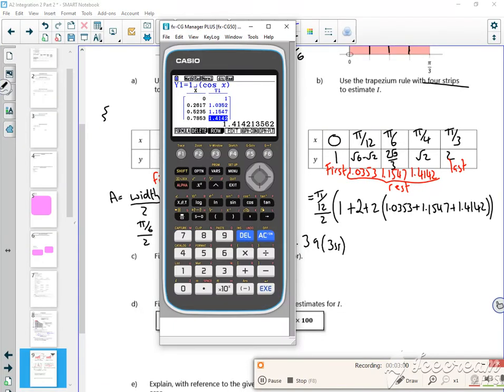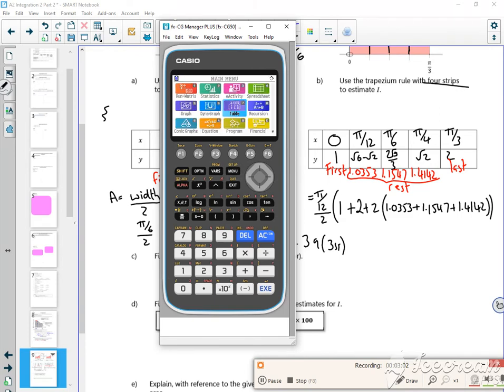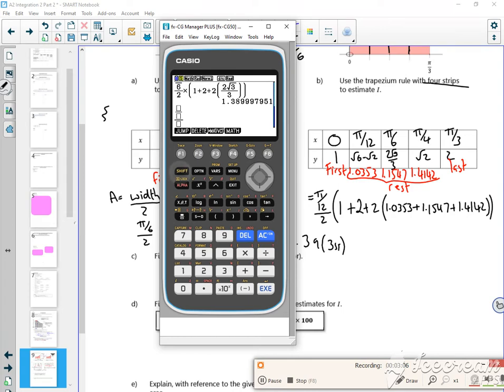In menu 1, so I've got π/12 over 2, then I've got the first one which is 1, the last one which is 2, and then 2 lots of the rest. I'm just going to pause it while I put it in.